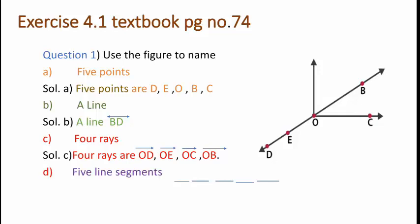Next, you have to name five line segments. What is a line segment? A line segment is a part of a line that is bounded by two distinct end points. So the five line segments for the given figure are: line segment OD, line segment OE, line segment OC, line segment OB, and line segment BD.